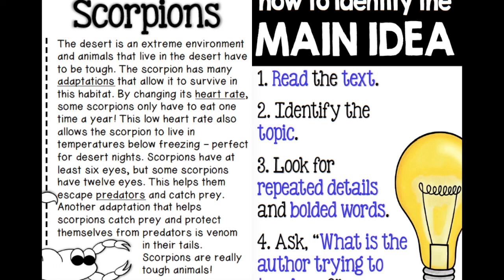Go ahead and follow along. Here we go. Scorpions. The desert is an extreme environment, and animals that live in the desert have to be tough. The scorpion has many adaptations that allow it to survive in this habitat. By changing its heart rate, some scorpions only have to eat one time a year. This low heart rate also allows the scorpion to live in temperatures below freezing — perfect for desert nights. Scorpions have to have at least six eyes, but some scorpions have 12 eyes. This helps them escape predators and catch prey. Another adaptation that helps scorpions catch prey and protect themselves from predators is venom in their tails. Scorpions are really tough animals.